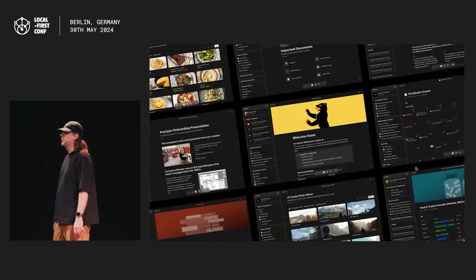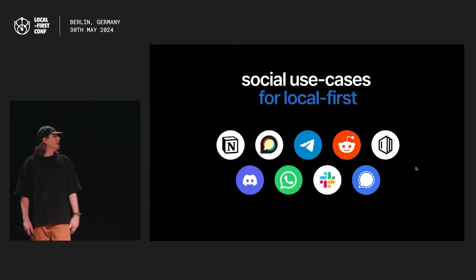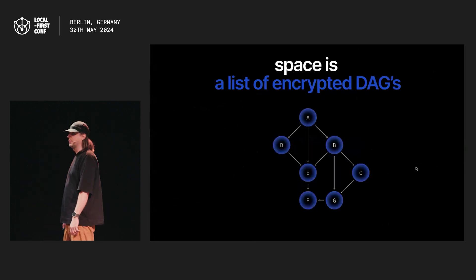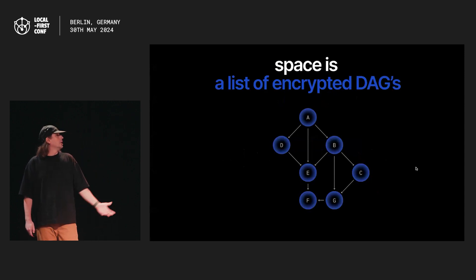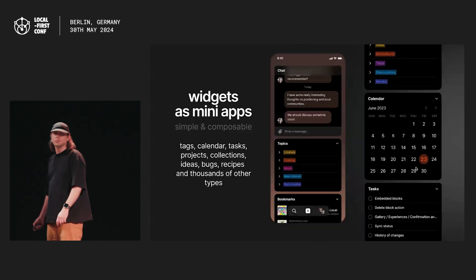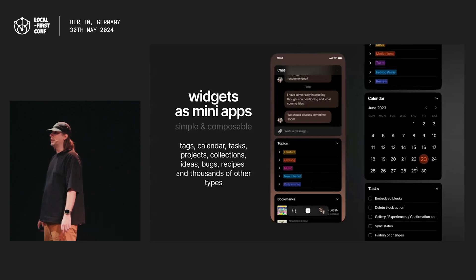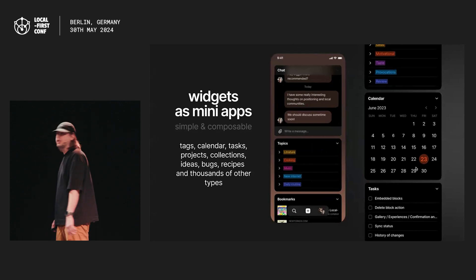When I speak about social, I don't mean feed-based products like Twitter or Instagram — I mean something like collaborative wikis, chats, or forums. For this, we've created the main format of AnyType: an encrypted space. It's a graph database managed by a group of people. Technically, it's an encrypted DAG, and on the interface level it's highly customizable. Creators and communities can build with widgets — they're like mini-apps that simplify setup and navigation. You can have a chat widget, topic, calendar, or whatever mix of types.